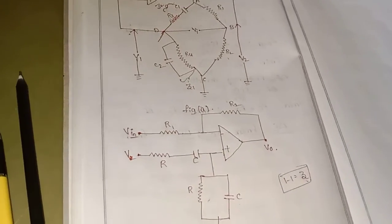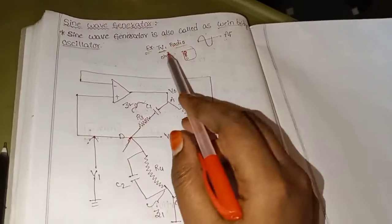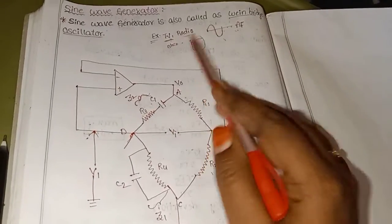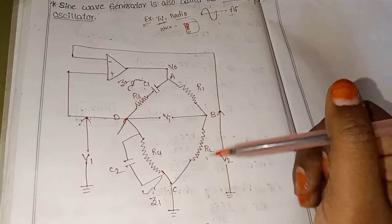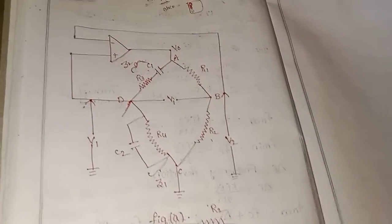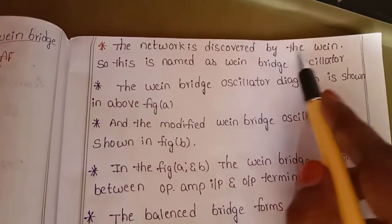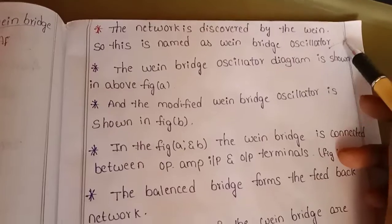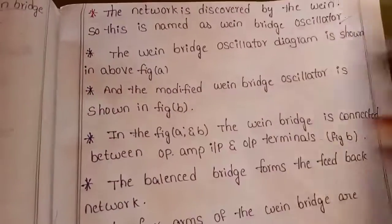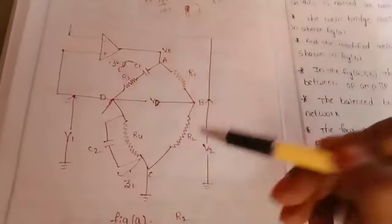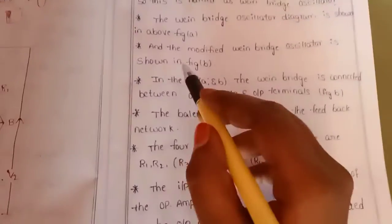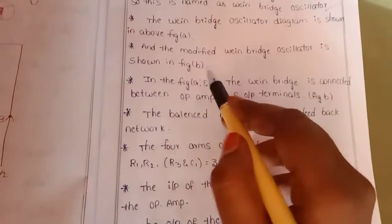There are two resistances R1 and R2. This is a modified diagram, and these two diagrams — figures A and B — are available for reference. The name of the sine wave generator is the Wien Bridge oscillator, named after the person who discovered this network.